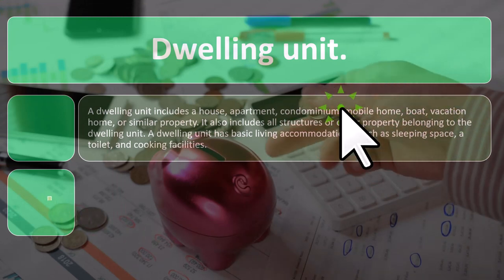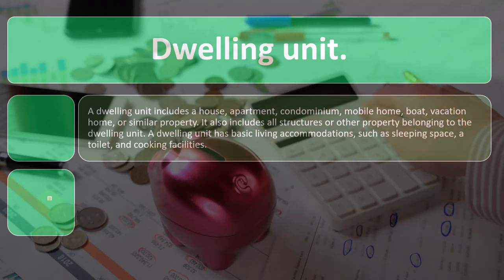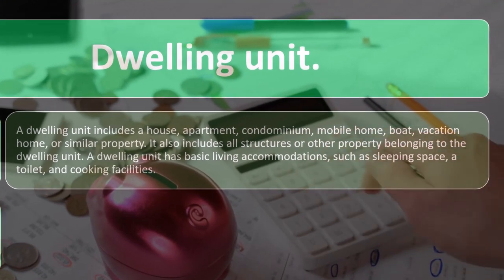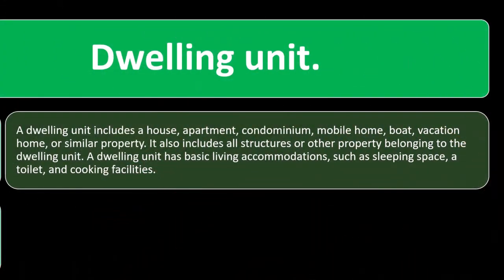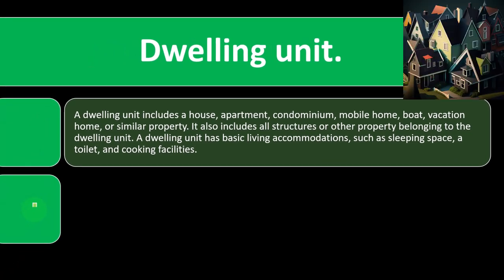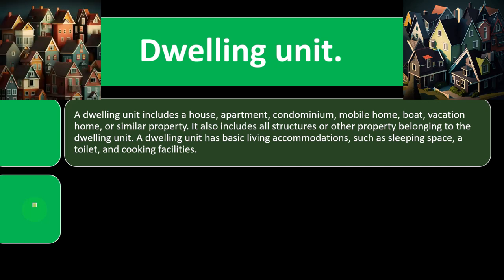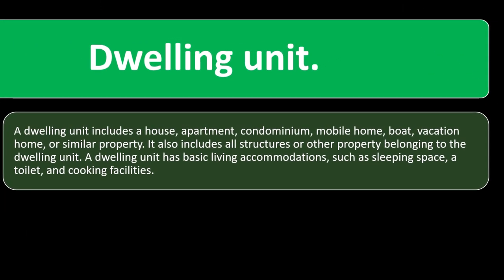A dwelling unit includes a house, apartment, condominium, mobile home, boat, vacation home, or similar property. It also includes all structures or other property belonging to the dwelling unit. A dwelling unit has basic living accommodations such as a sleeping space, a toilet, and cooking facilities — so it's pretty broad in spectrum, covering houses, boats, and mobile homes, as long as you have those basic living necessities.